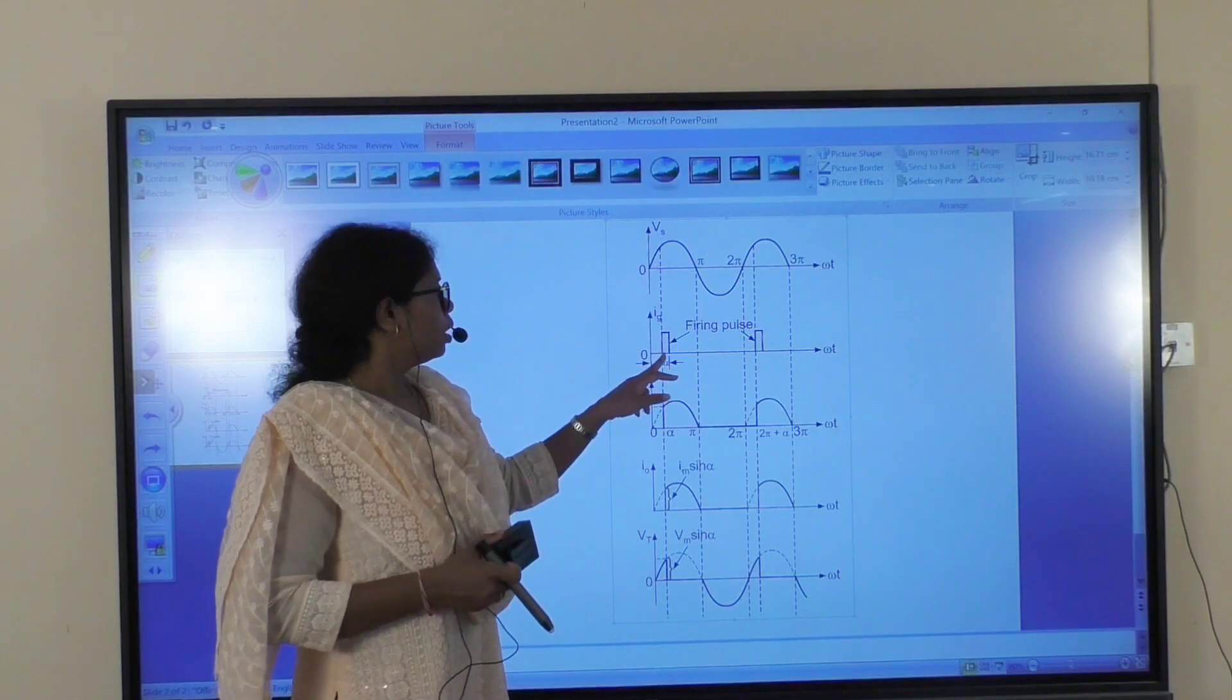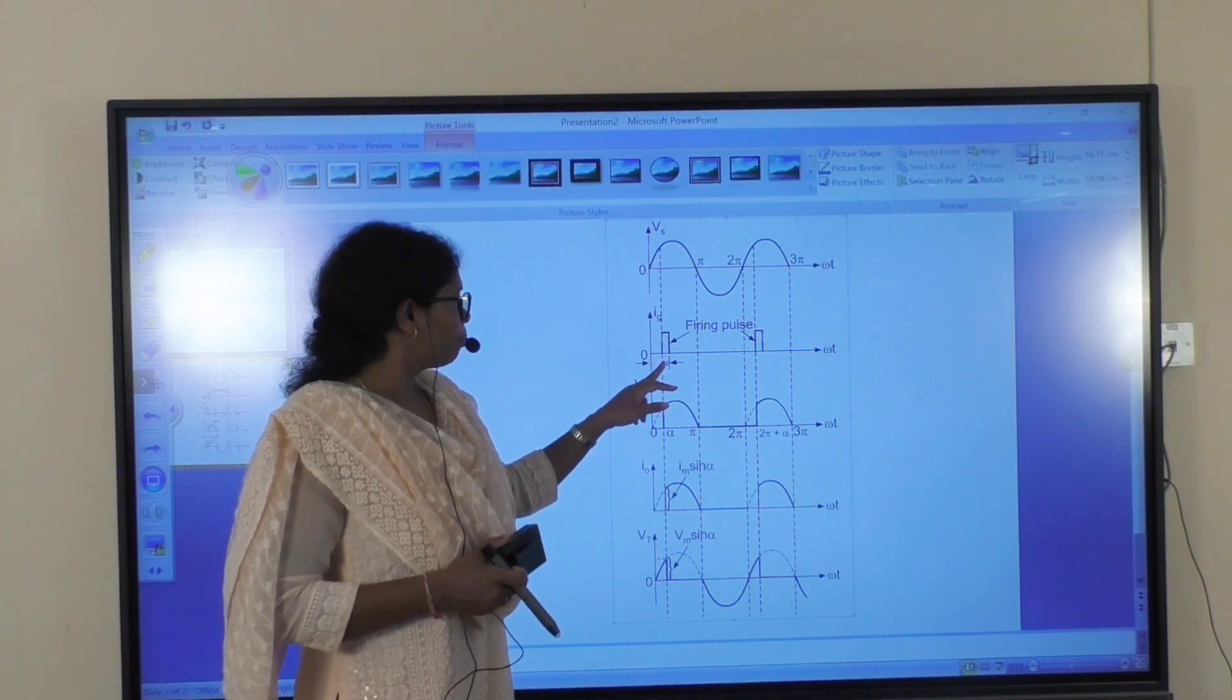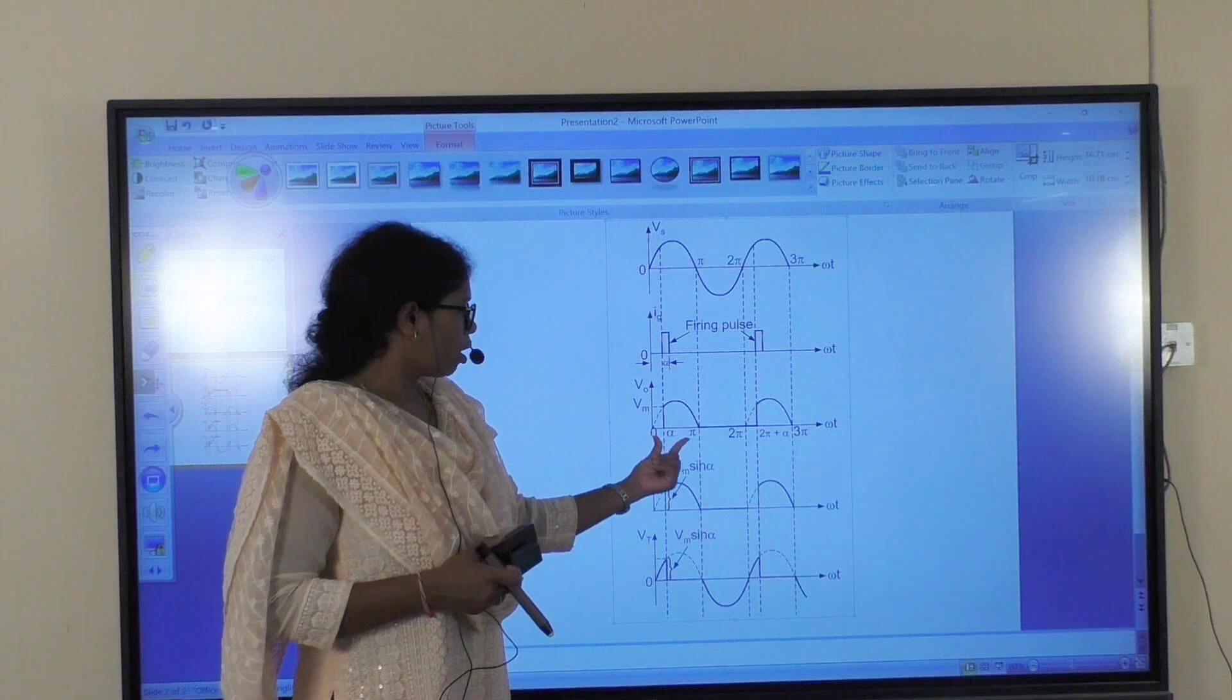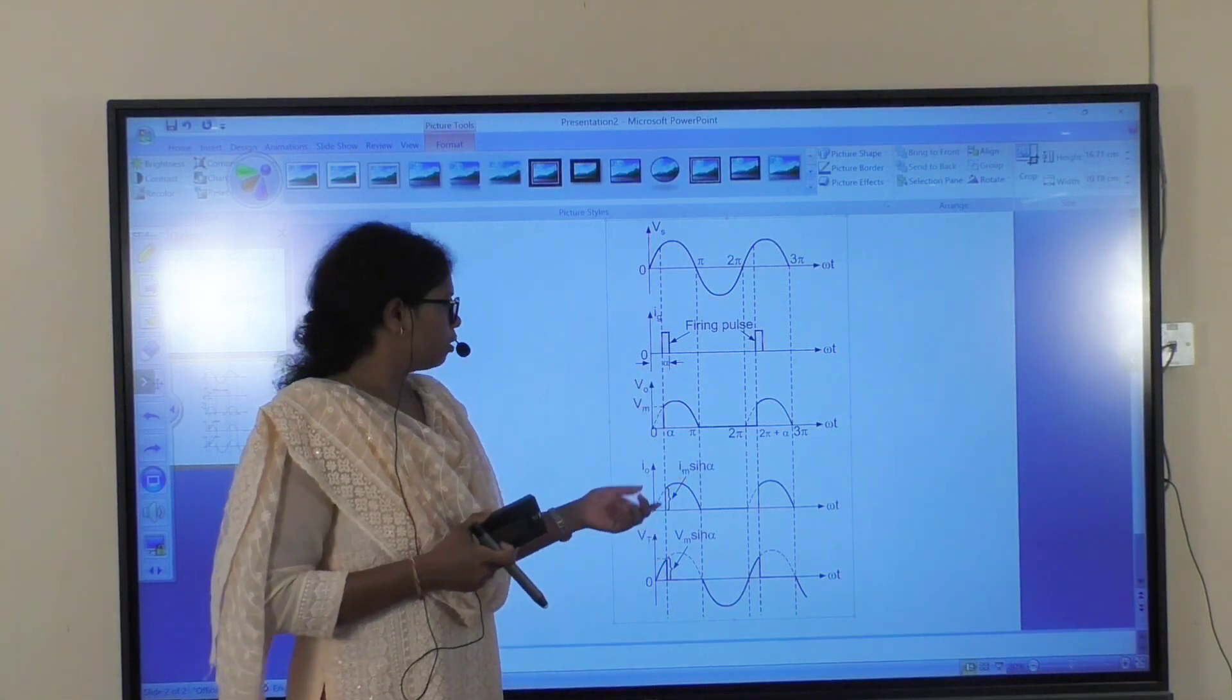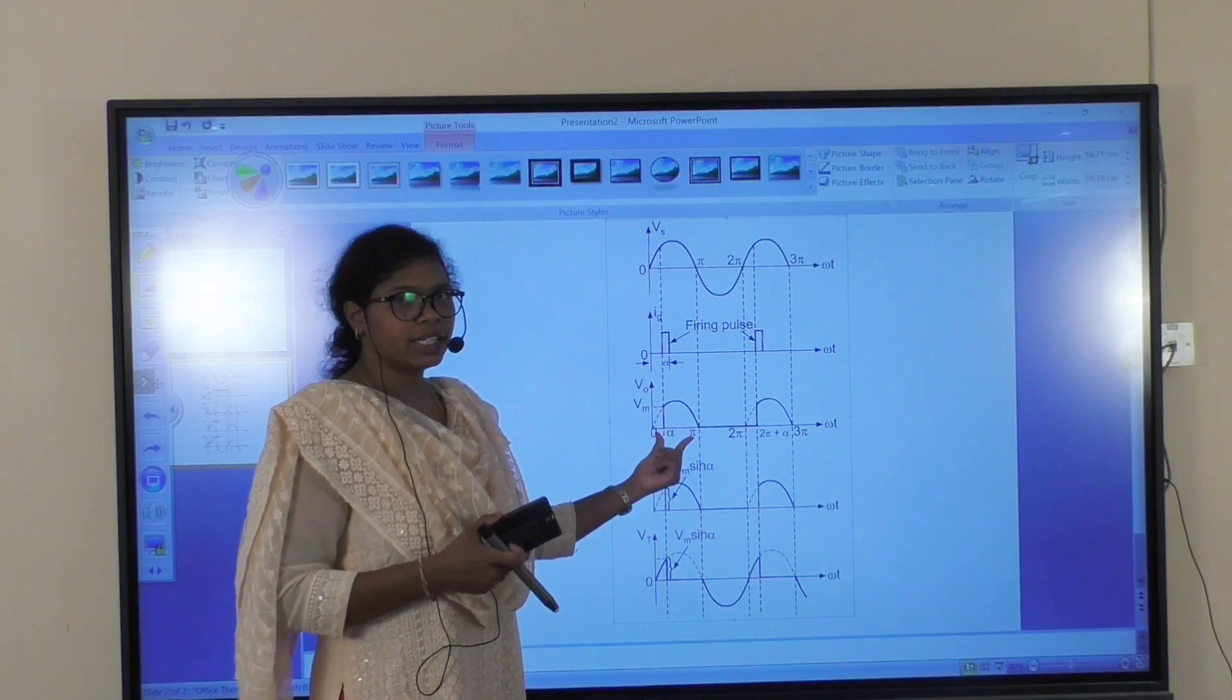When we give the triggering at angle alpha to the thyristor, conduction occurs at angle alpha. Then, conduction occurs from alpha to pi, and we get the output voltage across the load.